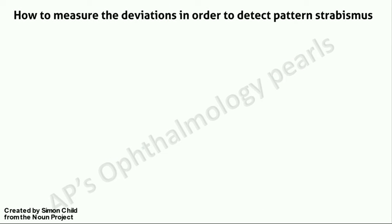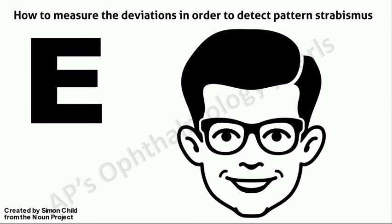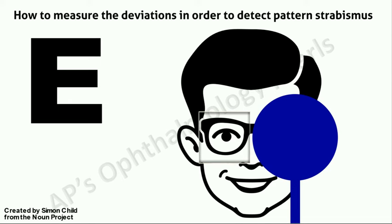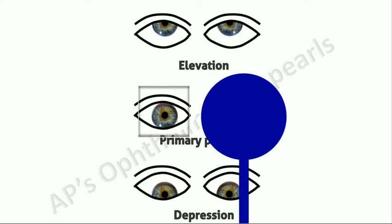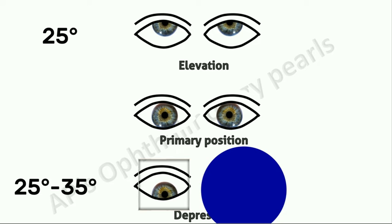How do you measure the deviations in order to detect a pattern strabismus? The patient should fixate on an accommodative target at distance, with full refractive correction worn. A prism and alternate cover test should be performed in the primary position and in 25 degrees up and 25 to 35 degrees downgaze. Chin-up and chin-down positions may be quantified with the help of a ruler and protractor. Additionally, the presence of any over-elevation or over-depression in adduction should be noted, and any torsion should be assessed by indirect ophthalmoscopy.